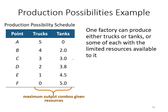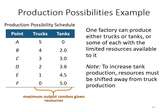This means they use all the resources to produce tanks instead of trucks. This movement of these two products' production tells you that to increase tank production, resources must be shifted away from truck production. Initially at point A you have five trucks, then moving to point F you can produce no trucks, because tank production increases from zero to five. With limited resources, you can either produce more trucks or more tanks, and eventually you reach the limit where all resources are used for one or the other.